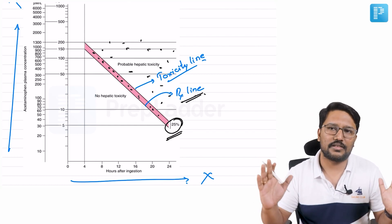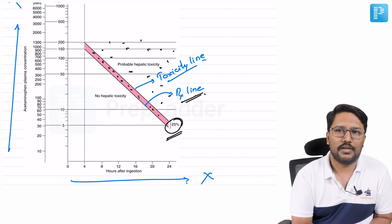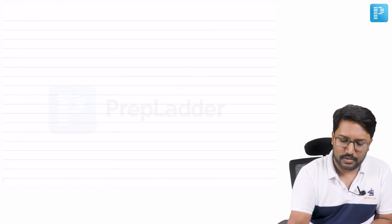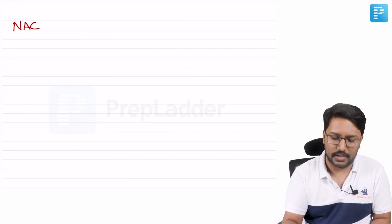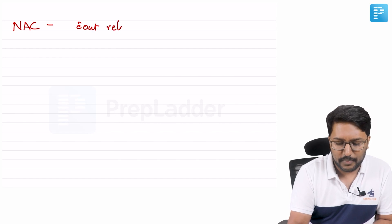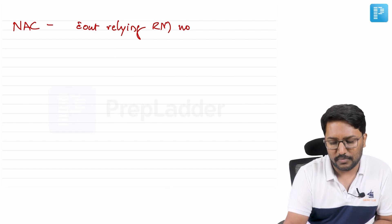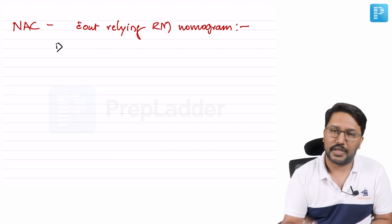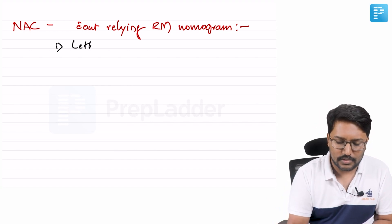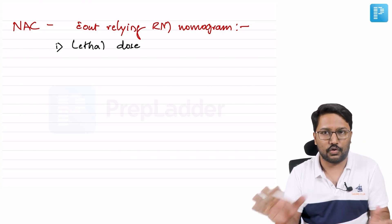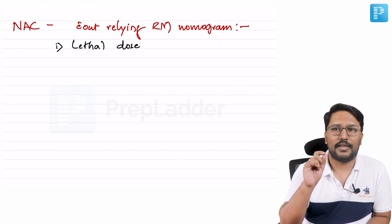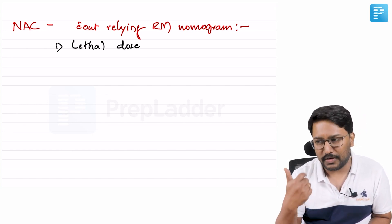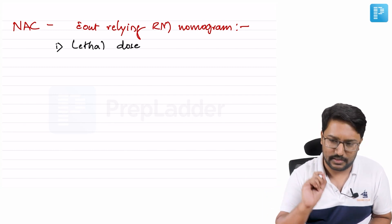Under what circumstances can we start N-acetylcysteine without relying on the Rumack-Matthew nomogram? First: if the patient has consumed a lethal dose — 10 grams or more for an adult, equivalent to two strips of 500mg tablets — start N-acetylcysteine immediately without waiting for serum paracetamol levels.